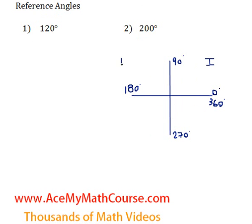Here's the first quadrant. That's the second, third, and fourth quadrant. 120 degrees is going to be between 90 and 180, so that's in the second quadrant. So I'm going to draw the terminal arm right here. There we go. It's here somewhere in the second quadrant.